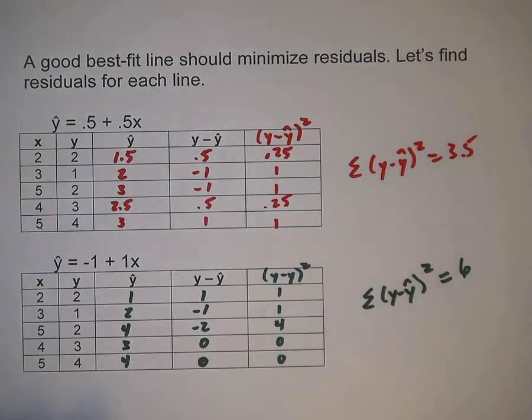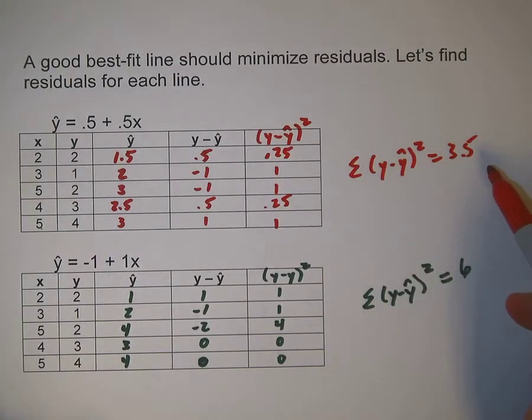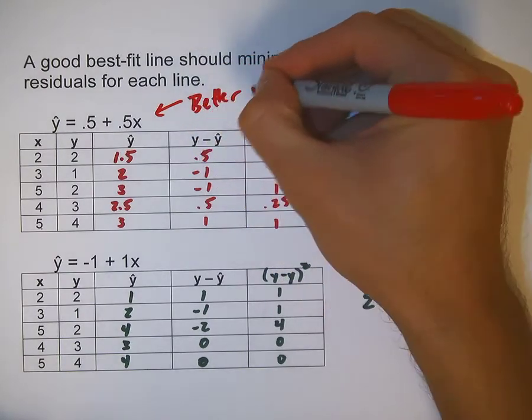Since this line has a smaller sum of squared residuals, this line will fit the data better. This is a better fit.